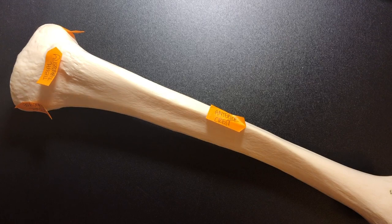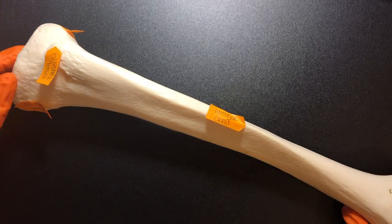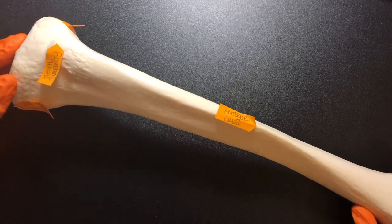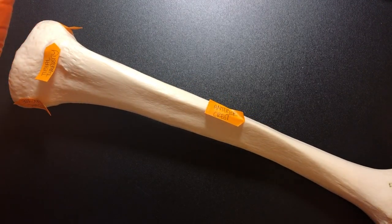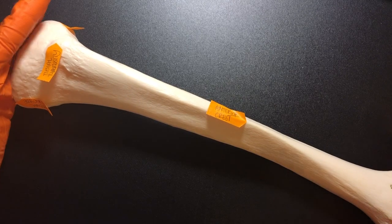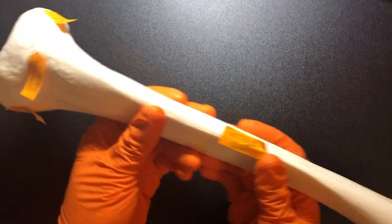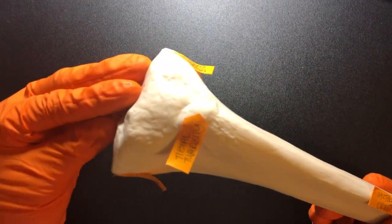Alright, now we have the tibia, which is the main weight bearing bone of the anatomical leg. So remember the anatomical leg is from the knee down.